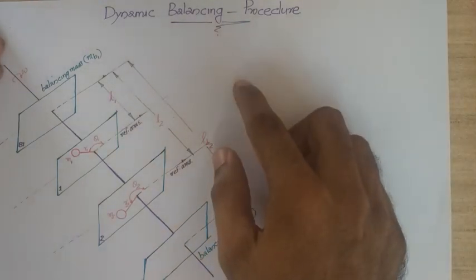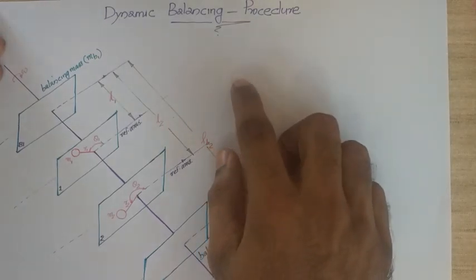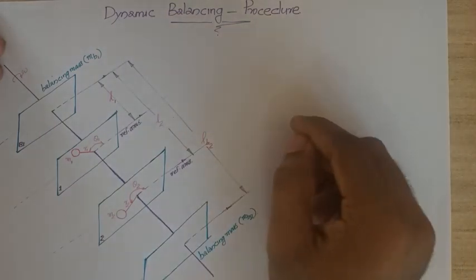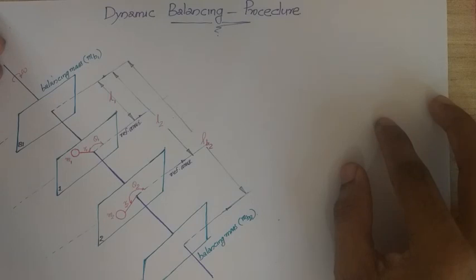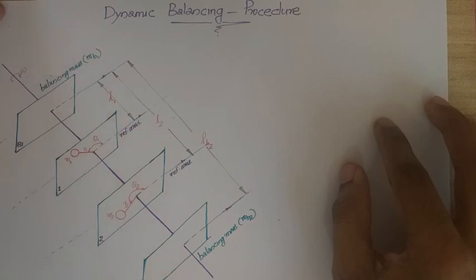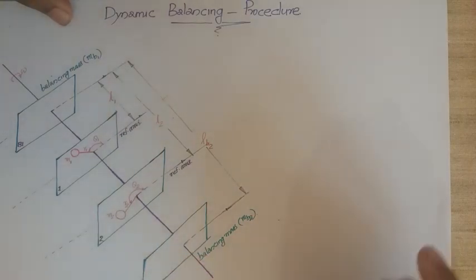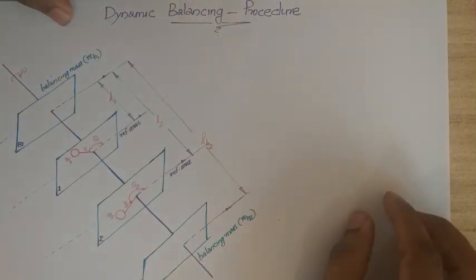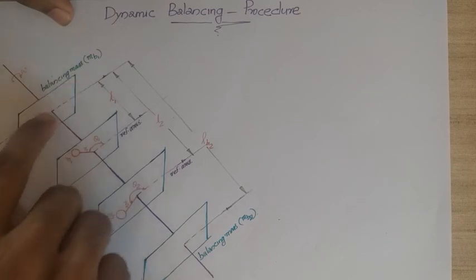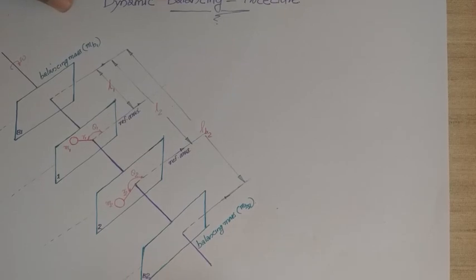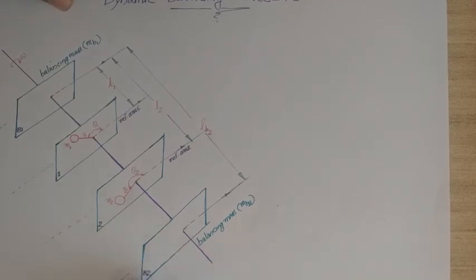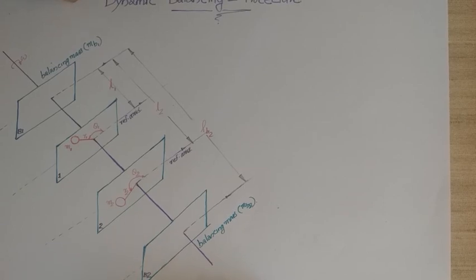For plane one, m1 is lying at theta one, and for plane two, m2 is lying at theta two. In dynamic balancing, you have masses rotating at different planes, so you have to balance it statically as well as dynamically — meaning you make the net force and net moment couple both zero. A minimum of two balancing planes are required, with balancing masses mb1 and mb2.